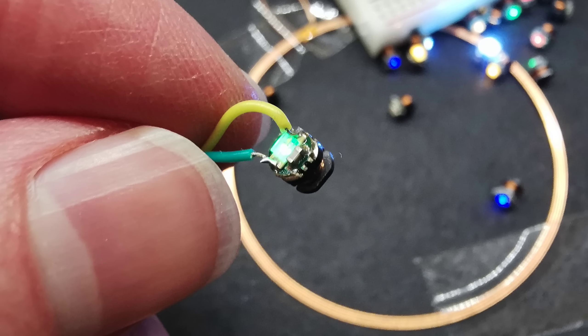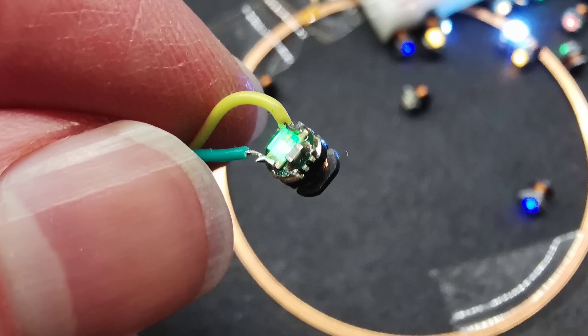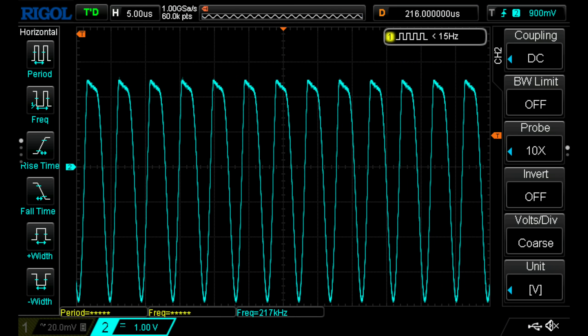So I've soldered a couple of jumper leads across one of the LEDs so I can connect it to my oscilloscope. You can see here that we're picking up a frequency of 217 kHz. The LED is clipping the signal at just around 2 volts. This is the forward voltage of a green LED.